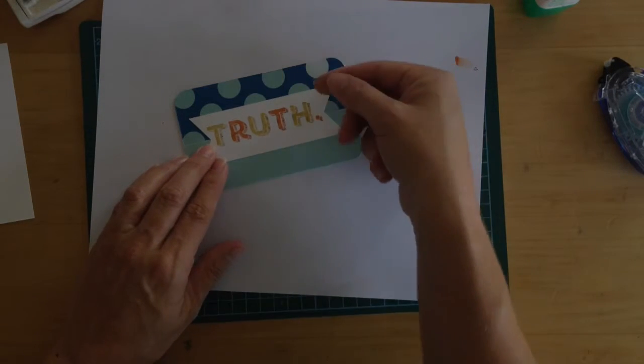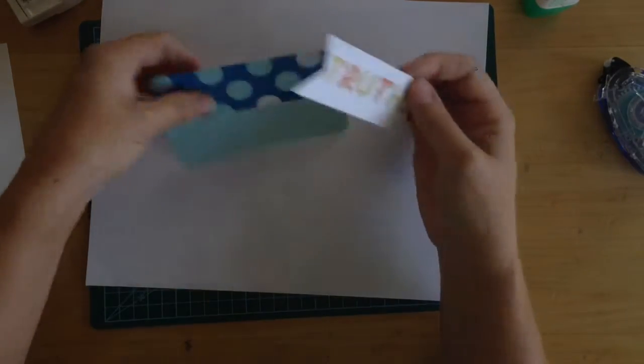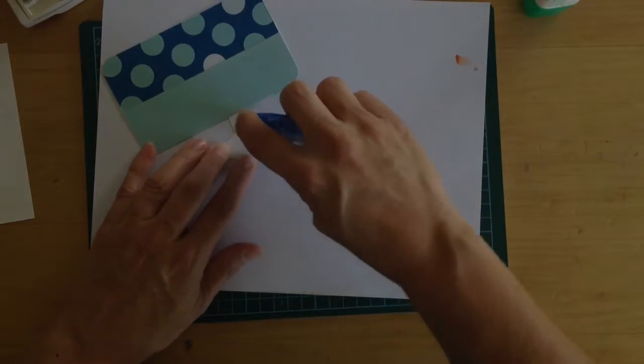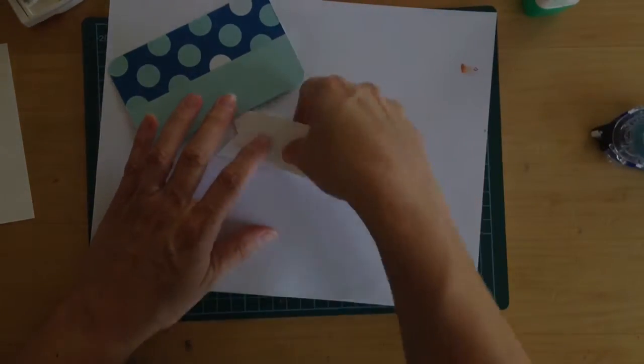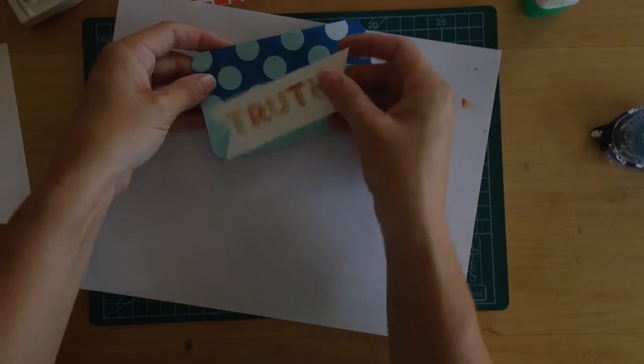You could use the mini stapler. There's lots of different ways. If you're going to mail it, I would say just use what I'm going to show you right now, just to use your monotape adhesive and stick it on there.